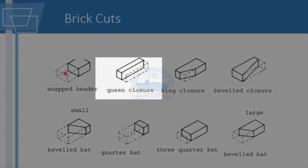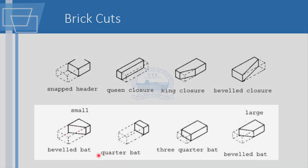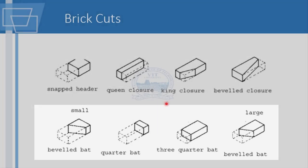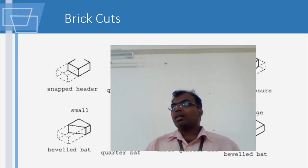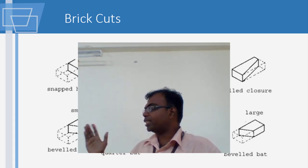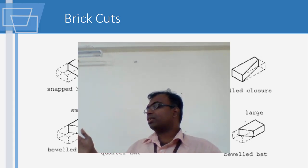These are the cuts of brick. If you are going to arrange bricks, you have to cut them. You have a king closer, a king closer which is beveled, a queen closer, a snapped header, and a beveled closer placed at an angle. These are called bats - brick bats are small pieces of brick used for filling in gaps. This is called a quarter bat, three-quarter bat; a half brick is a snapped header. Then you have a beveled brick and a beveled bat.